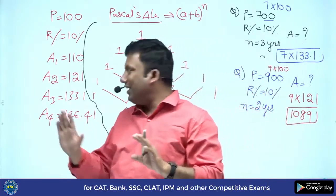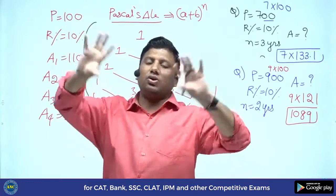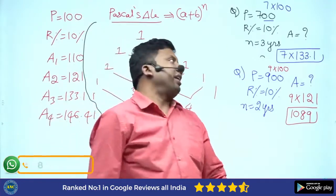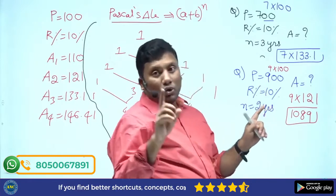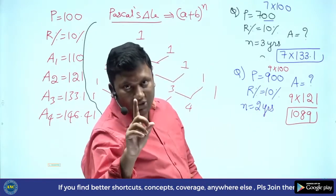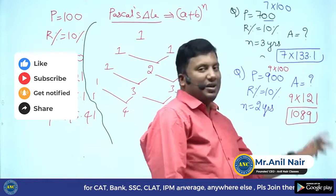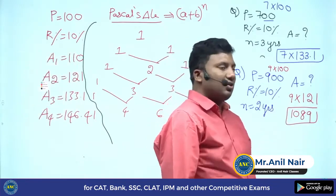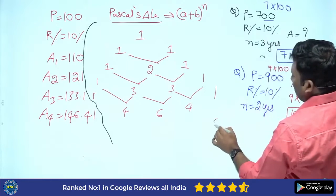I hope the idea is clear. Once you know these values, just apply the necessary multiplication factor and you get the answer. For P=100 over 2 years, (a + b) whole square gives 121. Since the principle is 9 times 100, here also it is 9 times, and here also it is 9 times.